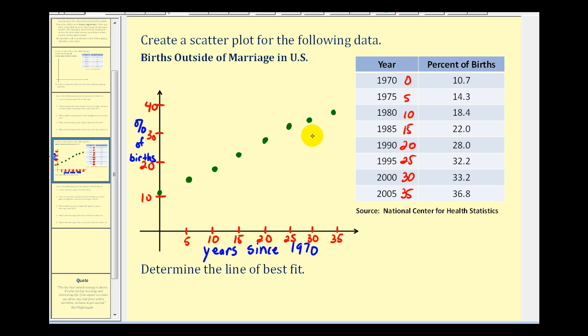And you can see from these green points, a linear model is going to be appropriate for this data. Let's go ahead and duplicate this scatter plot on the graphing calculator, and then we'll determine the line of best fit.